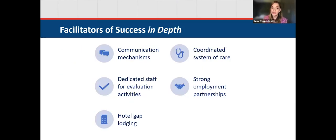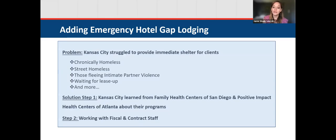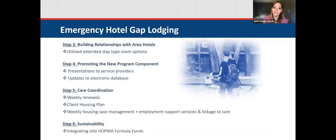Our facilitators were the gap lodging, employment partnerships, and coordinated system of care. For organizations interested in adding this type of housing service to your portfolio, we've broken this down into concrete steps — with a nod to the Family Health Centers of San Diego and Positive Impact in Atlanta — detailing how you can add hotel lodging and use HOPWA formula funds to add those line items.